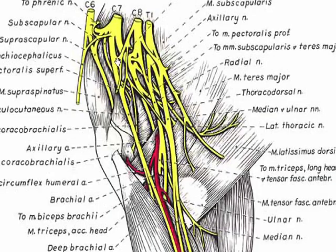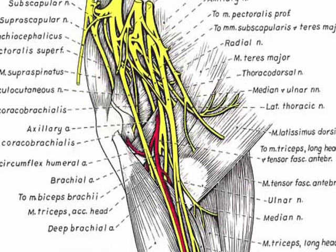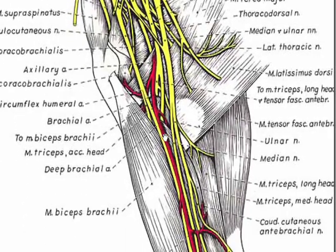This image shows the brachial plexus. It is formed by ventral branches of C6, C7, C8, and T1 spinal nerves. Named regional nerves emerge from the plexus. Each nerve — for example, the ulnar, median, and musculocutaneous nerves — contains axons from multiple spinal nerves.